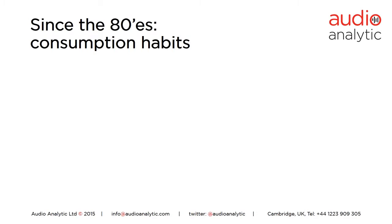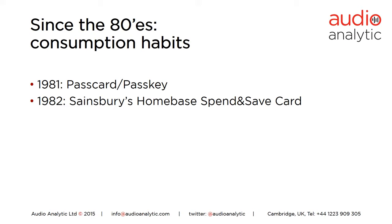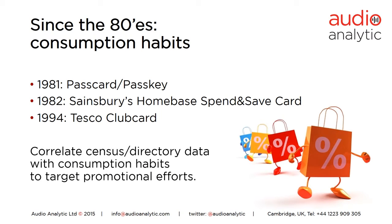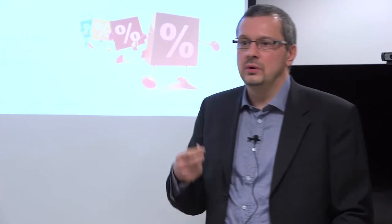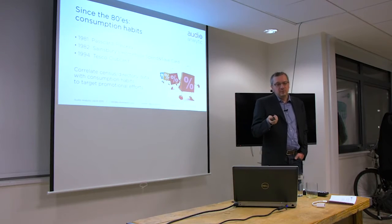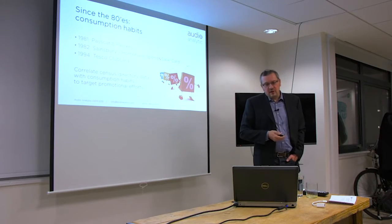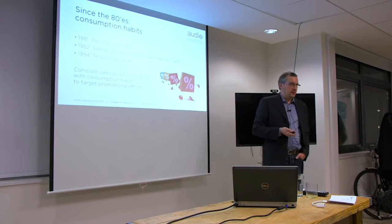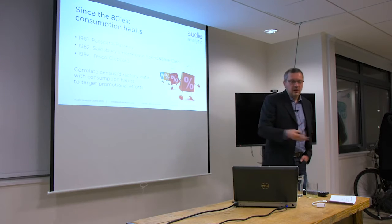Since the 1980s there's been a new type of data: consumption habits. In 1981, Pascal Paschi was the precursor to what became in 1982 the Sainsbury's home-based Spend and Save card — one of the first loyalty cards in the UK. Tesco followed in 1994 with the Tesco Club Card. These are tools to correlate census data with consumption habits to target promotional efforts. This was mostly enabled by the computerization of cash registers and stock management.